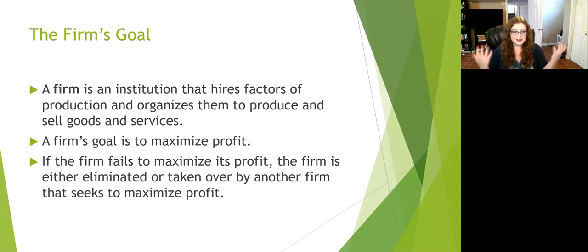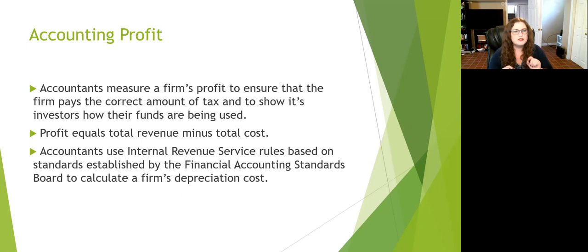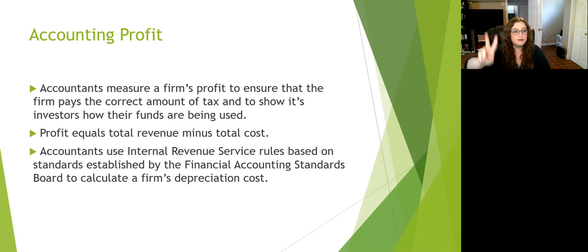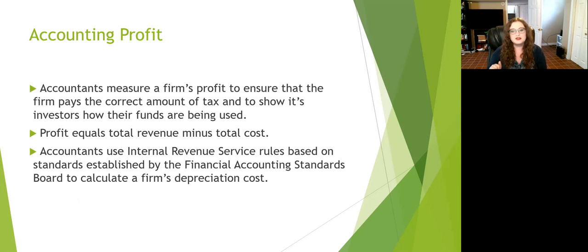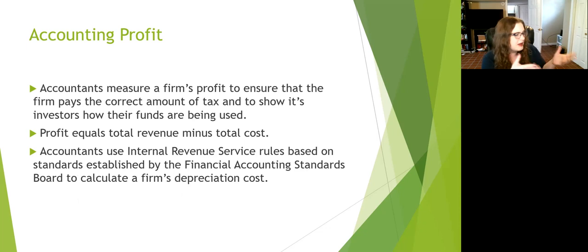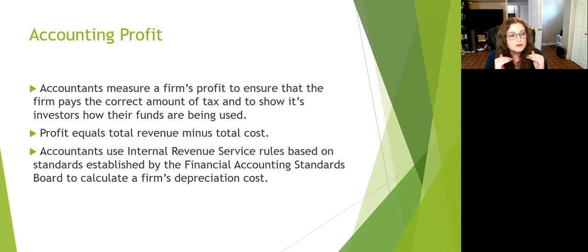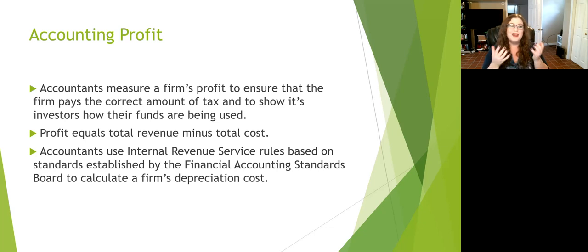We have two basic definitions of profit, and this one tends to confuse people on the test. The first is accounting profit — the idea of money in, money out. Accountants measure a firm's profit to ensure it pays the correct amount of taxes. In the accounting version, it's total revenue minus total cost — the amount spent on land, labor, capital, and entrepreneurship. Accountants use IRS rules, and one important point is that accountants use a firm's depreciation cost, meaning things are worth less over time.